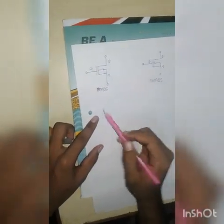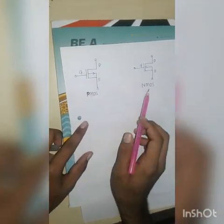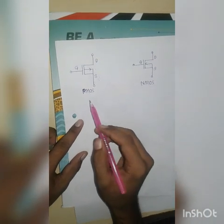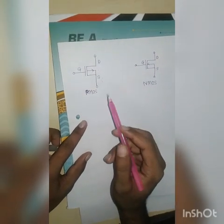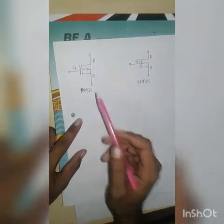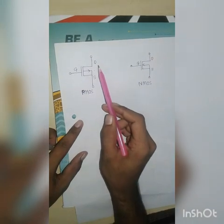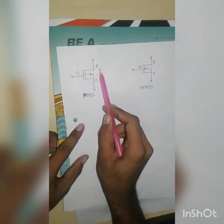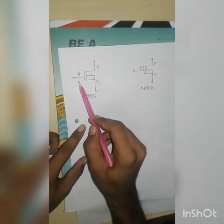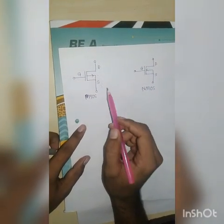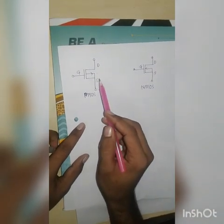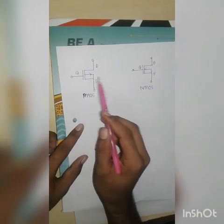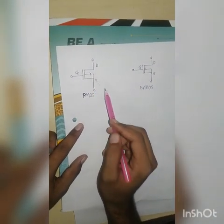We are going to introduce the difference between PMOS and NMOS. Starting with PMOS, you can see the symbol of PMOS. This terminal is the drain terminal, this terminal is the gate terminal, and this terminal is the source terminal. The outward arrow indicates the bulk terminal of the PMOS, which is always connected to the source.